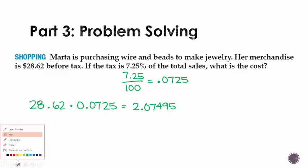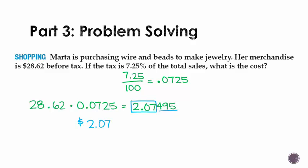When we multiply these together, we get 2.07495. But remember, this is money. So we can only have two numbers after the decimal. And because these numbers are less than 500, we're going to round it at $2.07 is our tax.